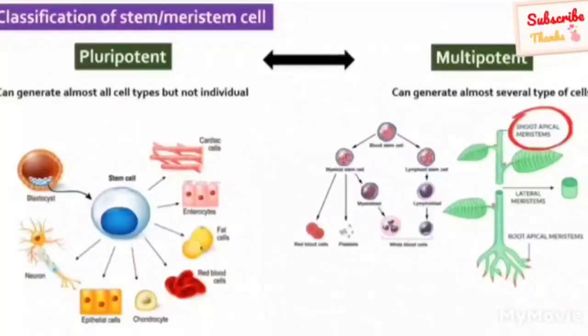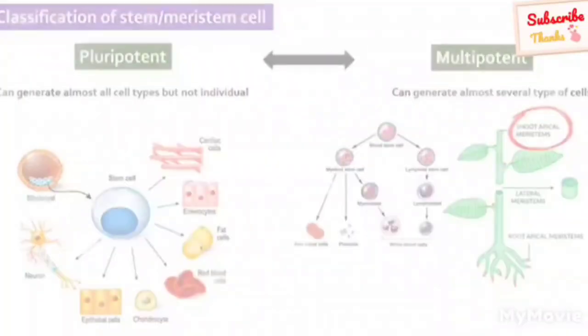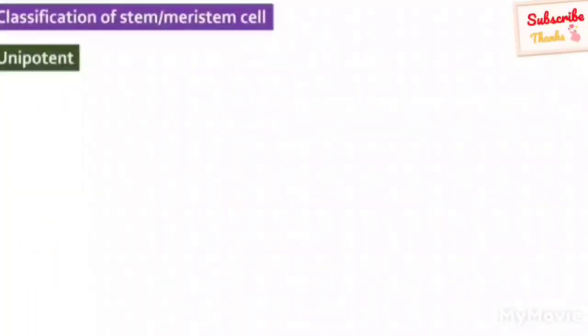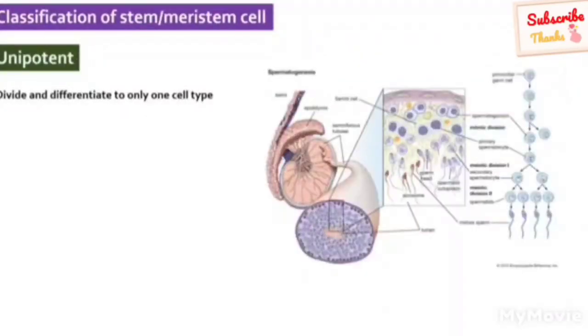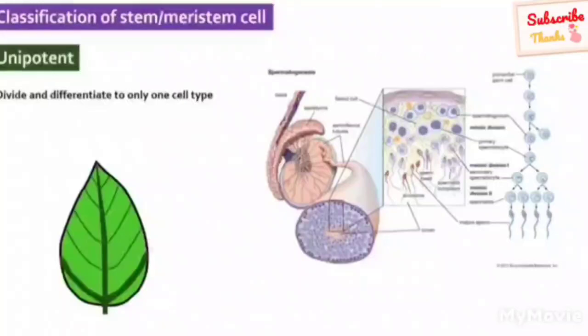And shoot, root or intercalary meristems may be classified as pluripotent too. A unipotent stem cell or meristem cell can divide and differentiate only to one type of cell. For example, a germline stem cell can produce only sperm cell. Similarly, in plants, marginal meristems of leaf will only form a particular type of leaf cell.